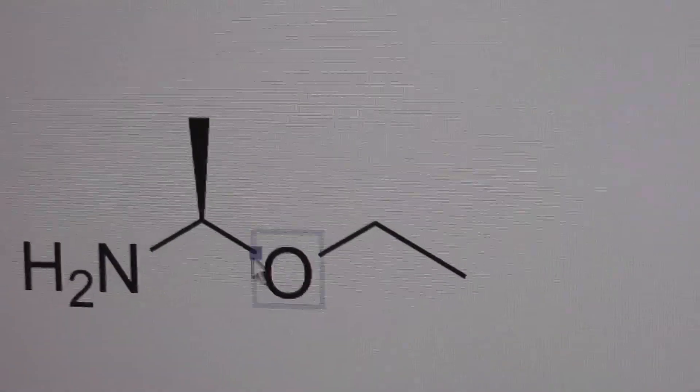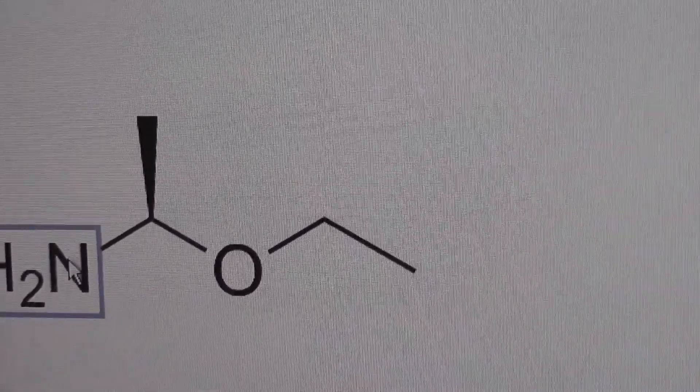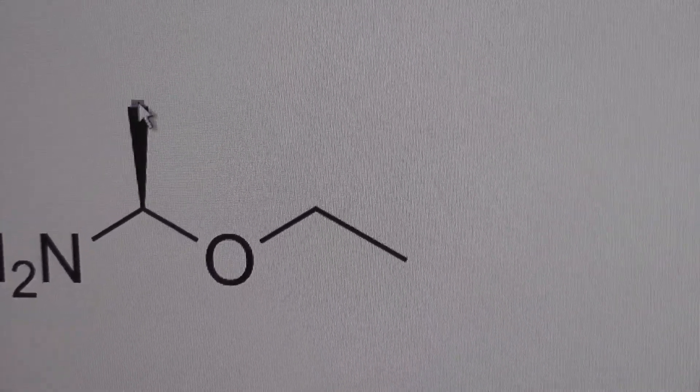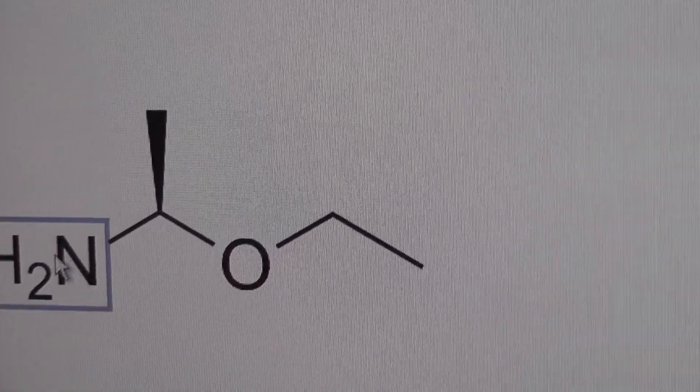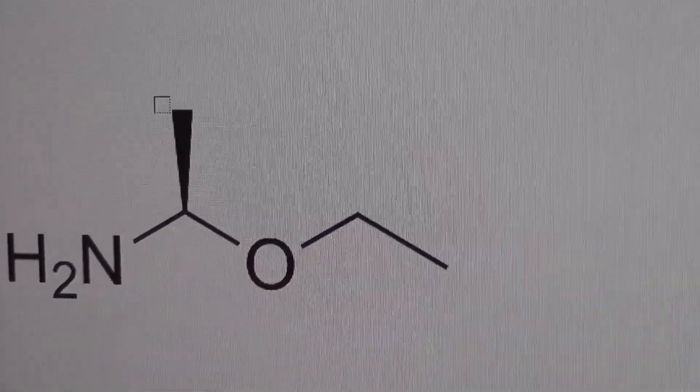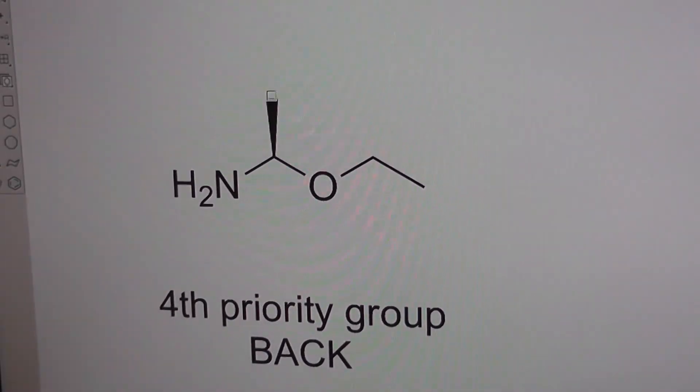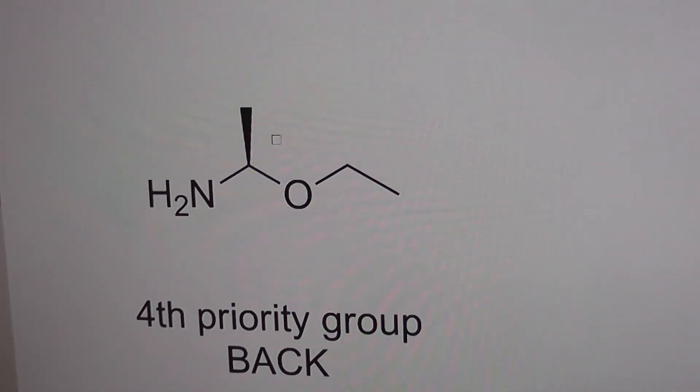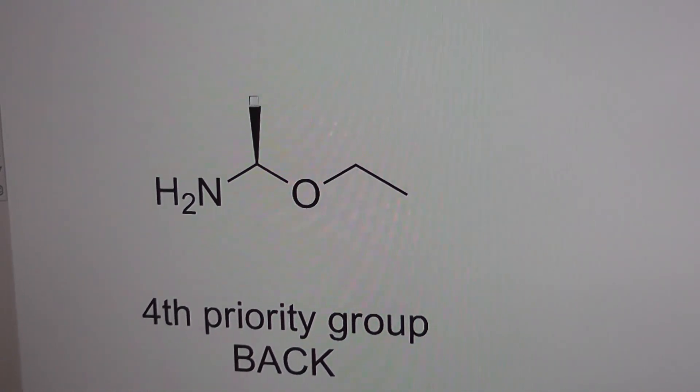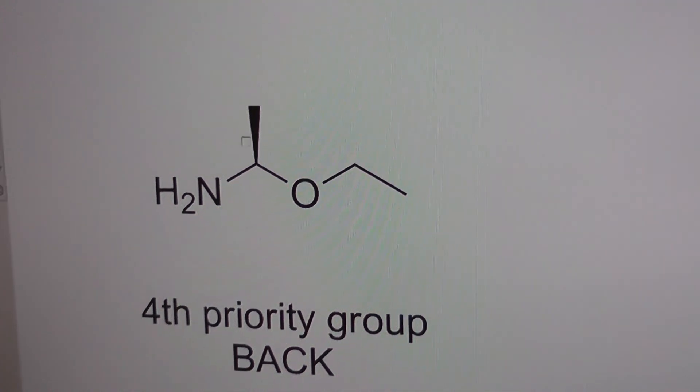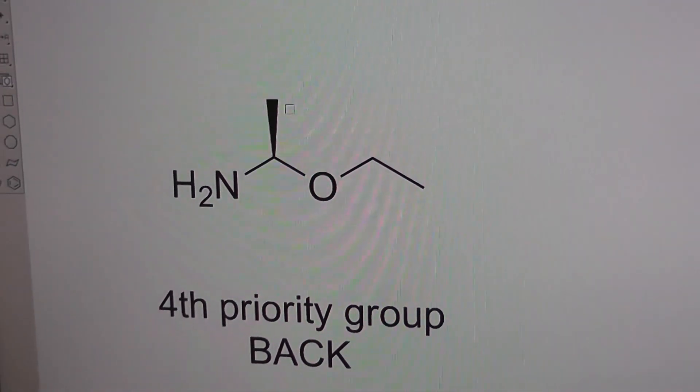According to the Cahn-Ingold-Prelog rules, the oxygen takes priority over the nitrogen, and the nitrogen takes priority over the carbon. So we have the first priority group here, second priority group here, third priority group here. The fourth priority group is to the back. It's a hydrogen, so this is an easy one to assign. We can say this is clockwise rotation from one to two to three, meaning that this is R configuration.